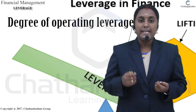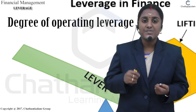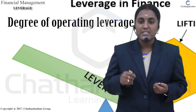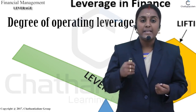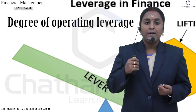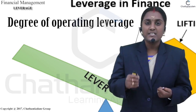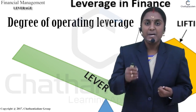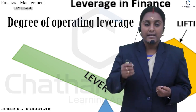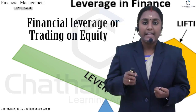Next, the degree of operating leverage refers to the percentage change in operating profit resulting from a percentage change in sales. It can be expressed as: degree of operating leverage equals percentage change in EBIT divided by percentage change in sales.